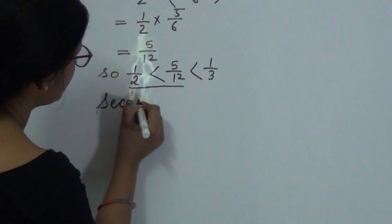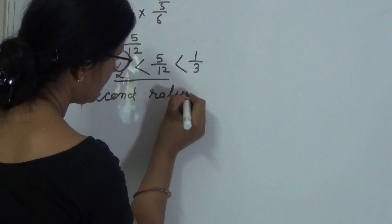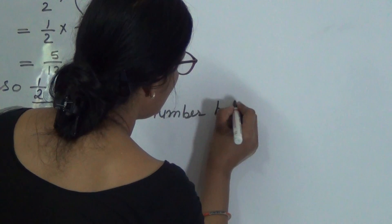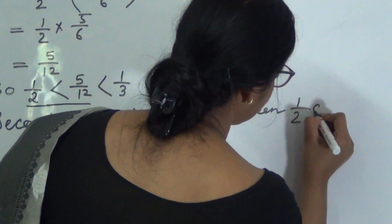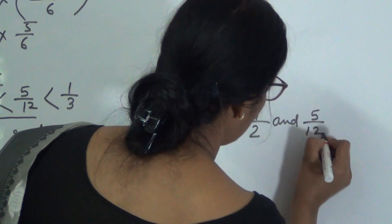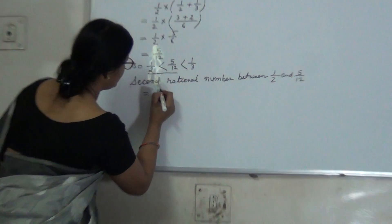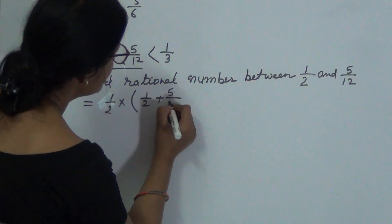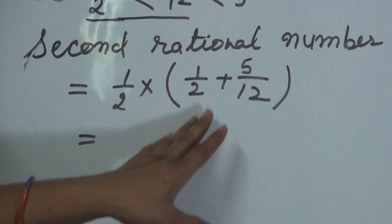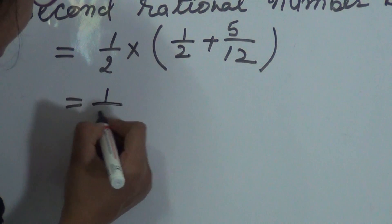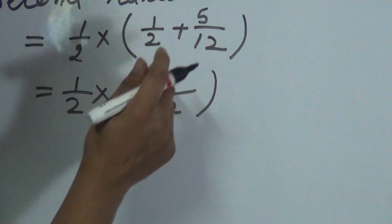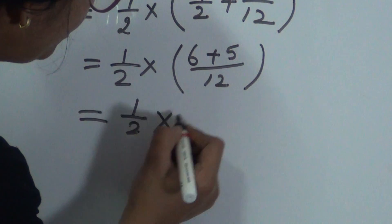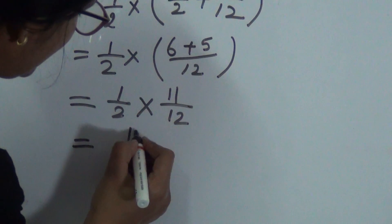For the second rational number, we are finding the average of 1/2 and 5/12. So it is 1/2 into (1/2 plus 5/12). The LCM of 2 and 12 is 12, so we get 6 and 5 respectively. This gives us 1/2 into 11/12, which equals 11/24.